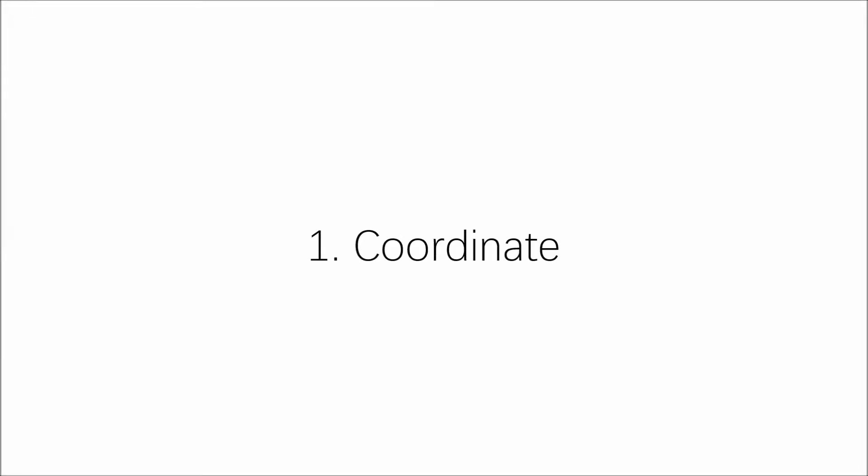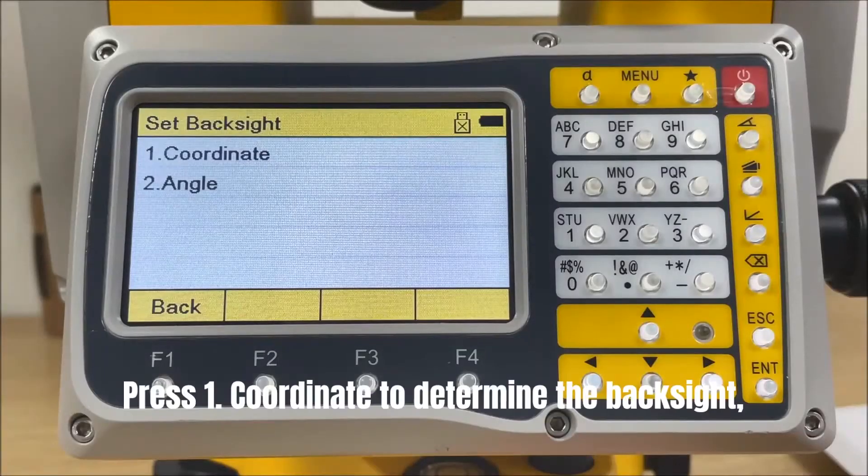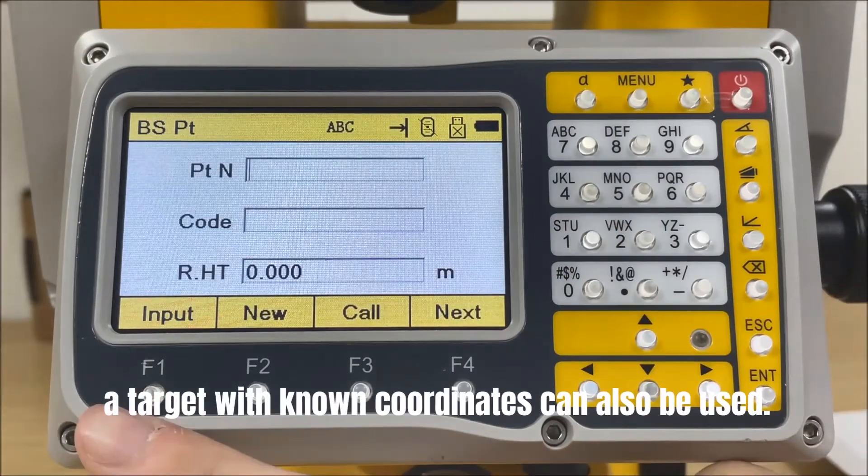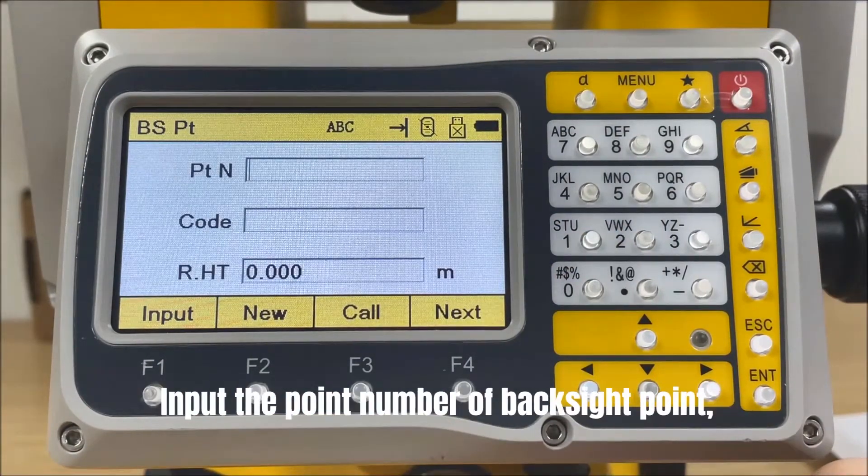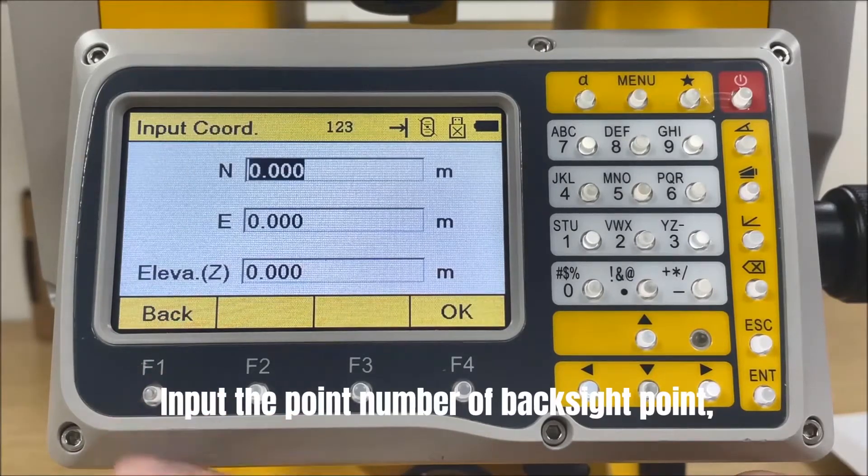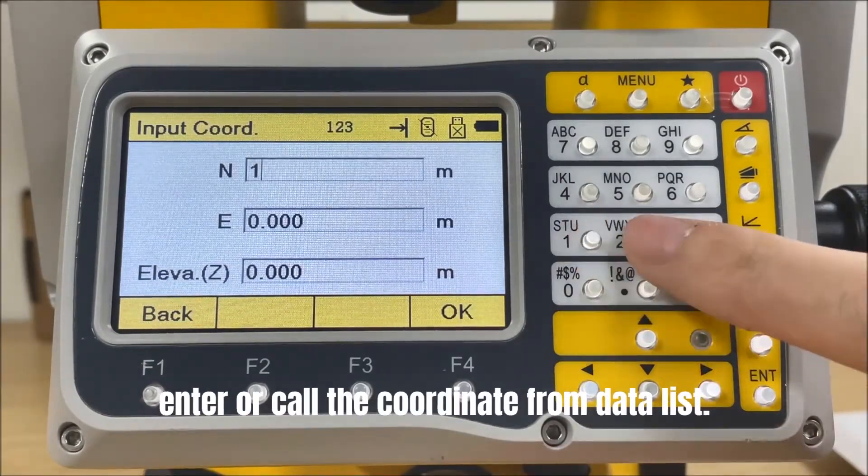Method 1: With coordinates. Press 1 to determine the back site. A target with known coordinates can also be used. Input the point number of back site point, enter or call the coordinate from data list.